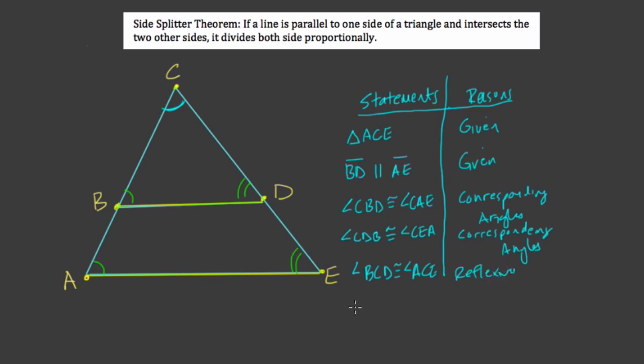And now you have that the two triangles are congruent. So triangle BCD is congruent to triangle ACE. And that's by the angle, angle, angle postulate.